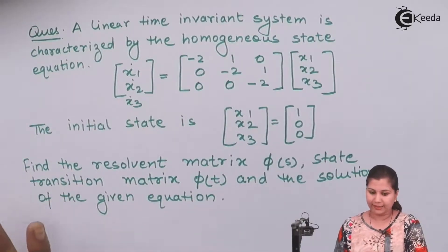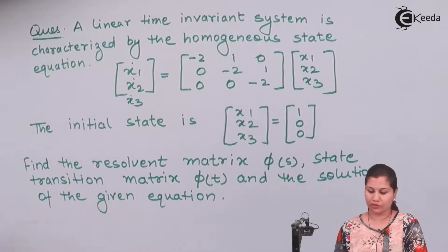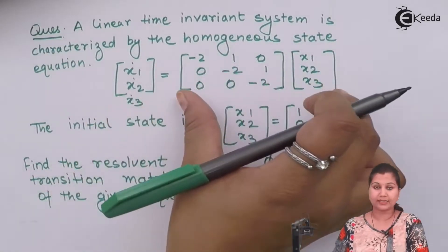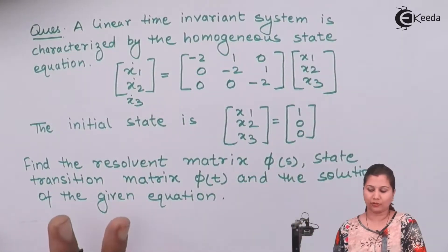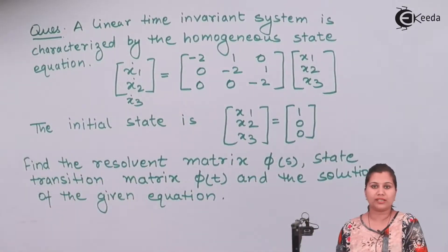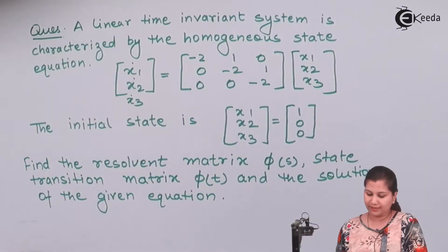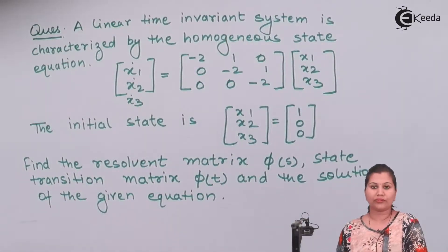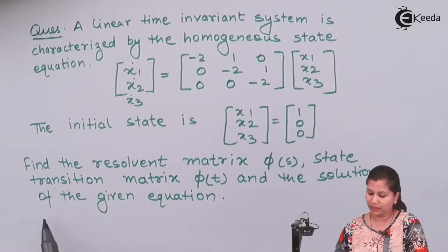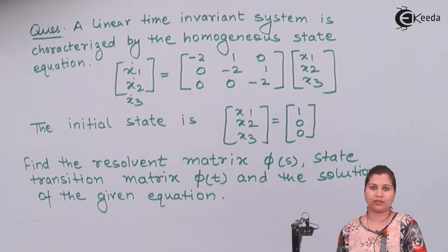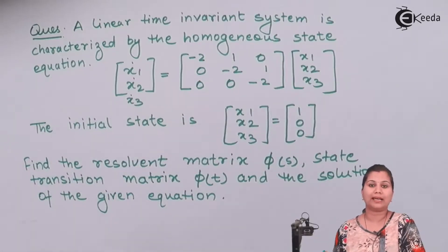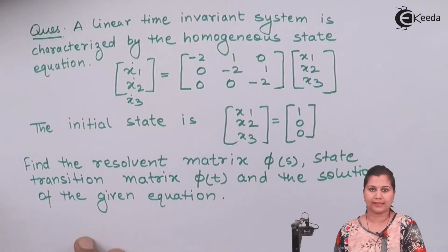First, we can see that this is a homogeneous equation because in the state equation no input is given — the input is 0. So this is a homogeneous system. For a homogeneous system, we will use the formula for the solution of the time invariant system where the input is 0.